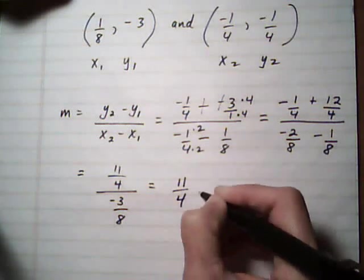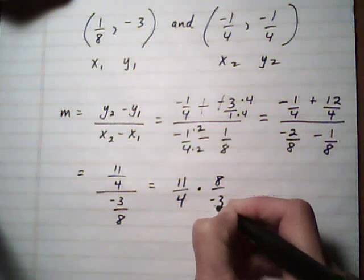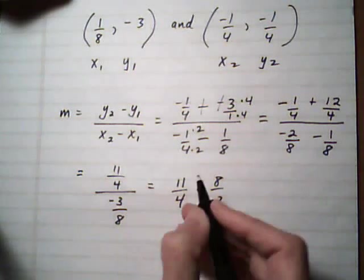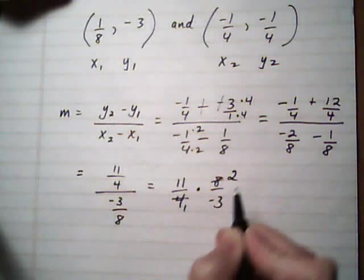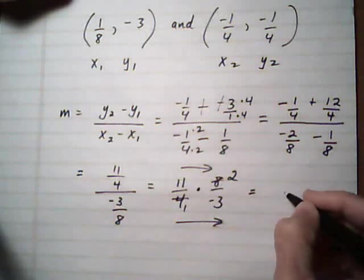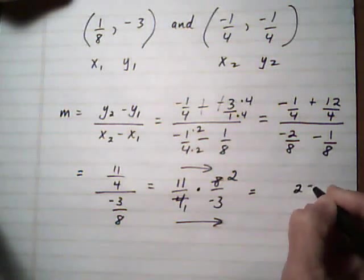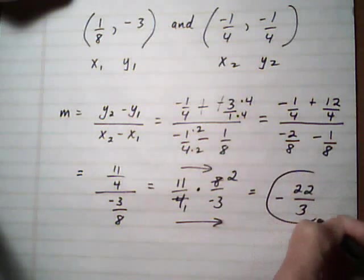So we turn it to a multiply problem. Now we do cancelling. 4 goes into 8 twice. Multiply across. And we get our answer, 22 over 3. And it's a negative slope.